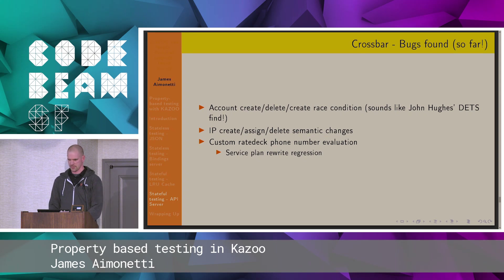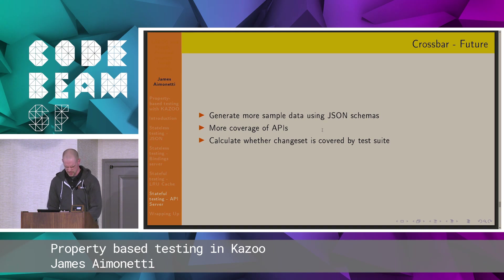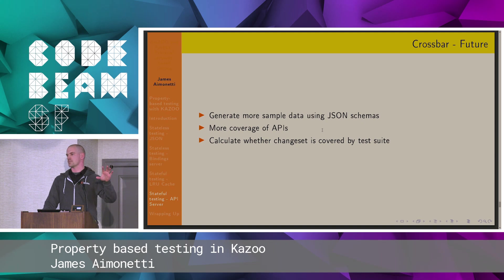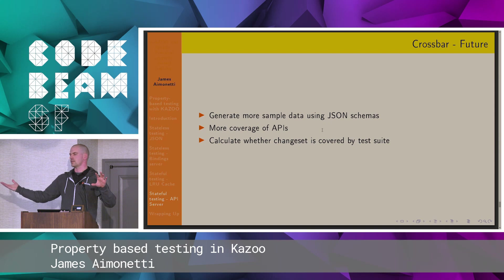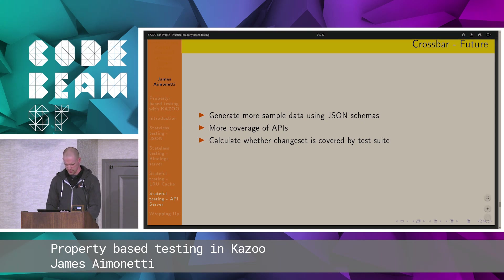Some things for the future: we use JSON schemas to define the request data, and I'd like to start creating generators based on those schemas, because right now I just use the bare minimum to get the request to be valid. More coverage of the APIs. And what I think would be really cool is when somebody submits a pull request with crossbar changes, to see that the PropEr test suite actually exercised that change set with coverage. That's one of the pie-in-the-sky things I've thought about.